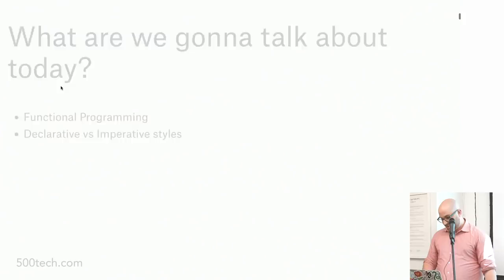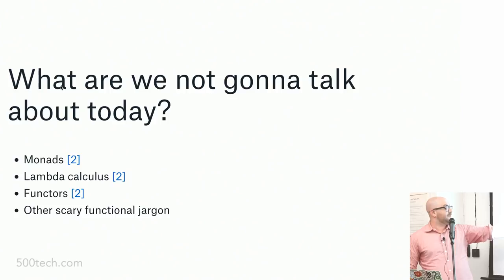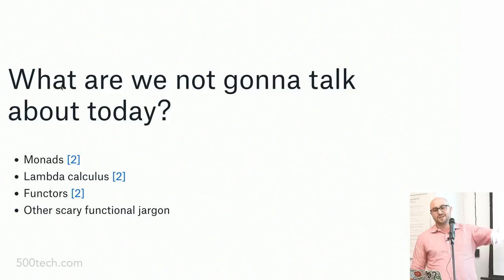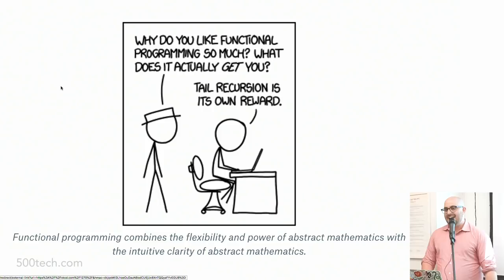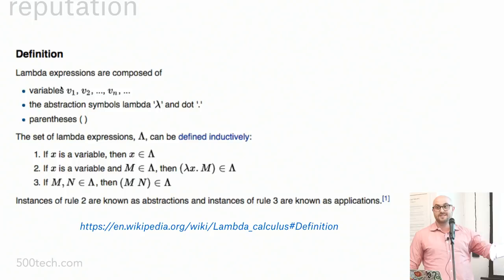What are we not going to talk about today? We are not going to talk about monads, lambda calculus, or functors, and I'm going to avoid as much scary jargon as possible. FP tends to get a bad rep historically because functional programming combines the flexibility and power of abstract mathematics with the intuitive clarity of abstract mathematics. If you look at the Wikipedia page for lambda calculus, you can see why — I don't know what that means.